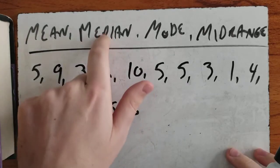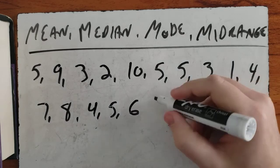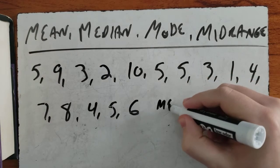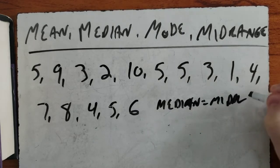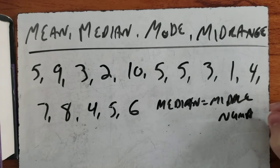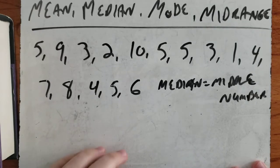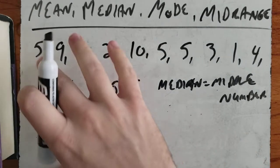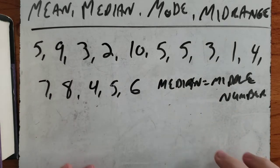Next we have the median. The median is our middle number. It's the middle number when our numbers are all in order from lowest to greatest. So the first thing you have to do to find the median is put the numbers from lowest to highest.